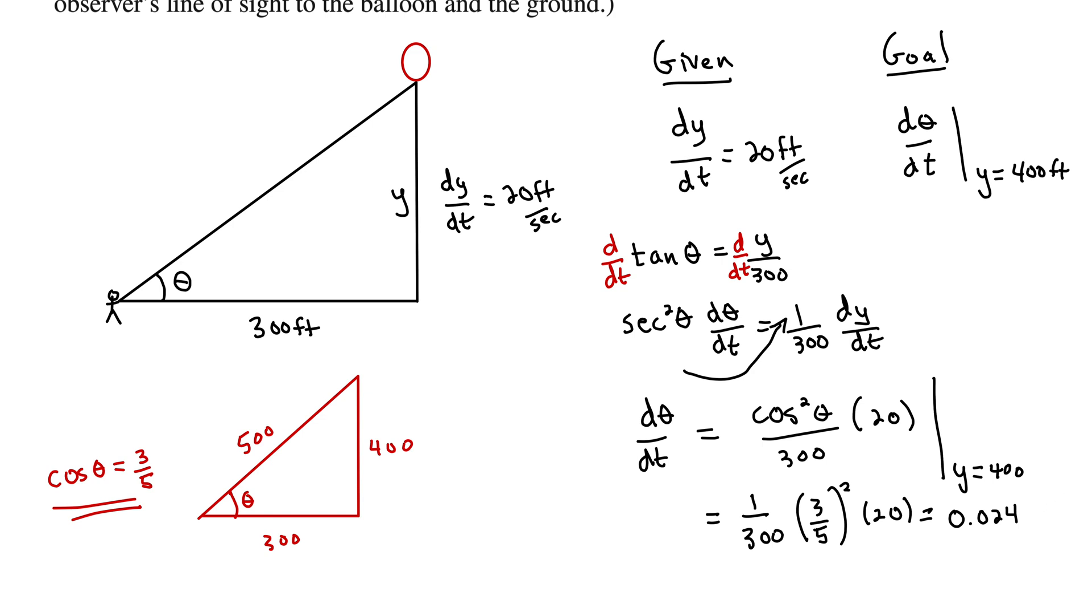What are the units here? The quantity that we just computed is d theta dt. So our units should be units of theta over units of time. Units of theta are radians. And looking at our given, we have per second. So it's radians per second.